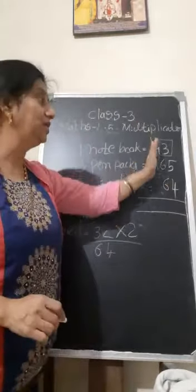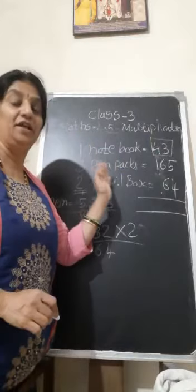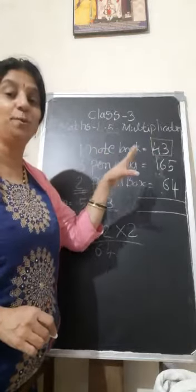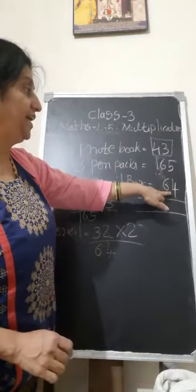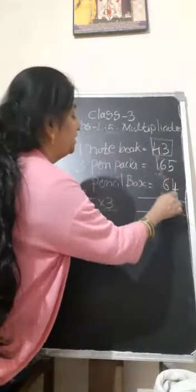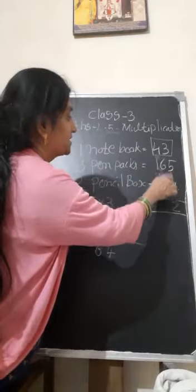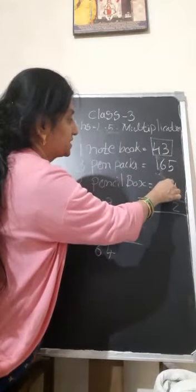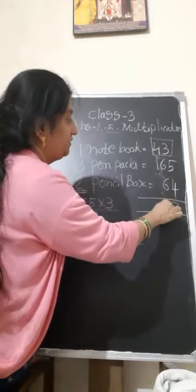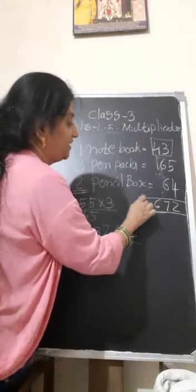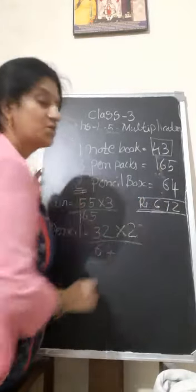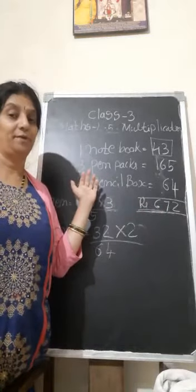Now you add all this. Now you should add all the numbers. Then you will get how much money she has to pay the shopkeeper. Five plus four, nine. Nine plus three, twelve, one. Seven. Six plus four, ten. Ten plus six, sixteen. Sixteen, one, seventeen, one. Four plus one, 172 rupees she has to pay for the shopkeeper.